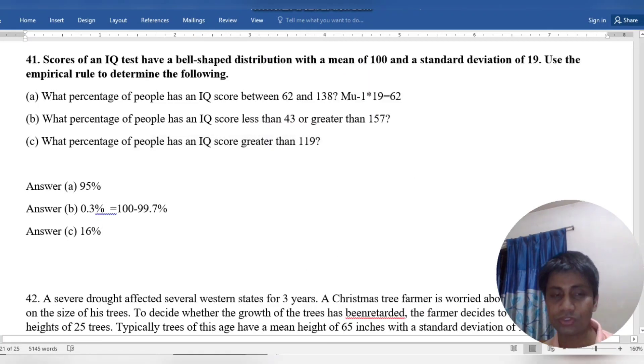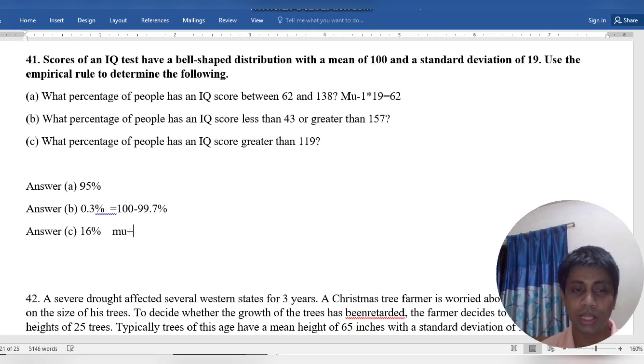That means mu plus one sigma equals mu, which means 100, plus sigma, which means 19, equals 119.